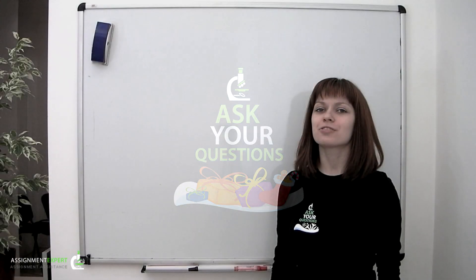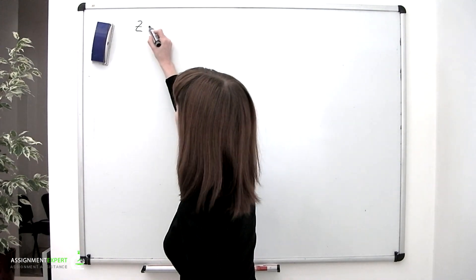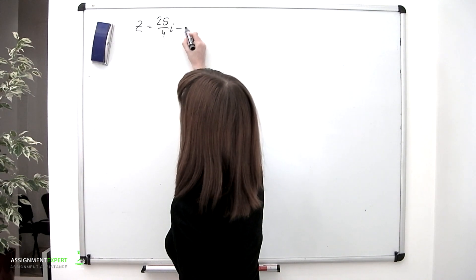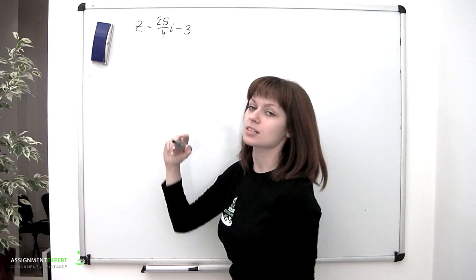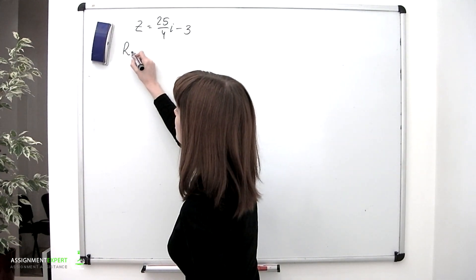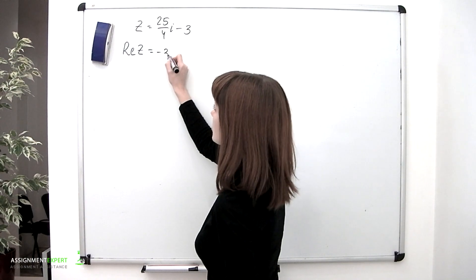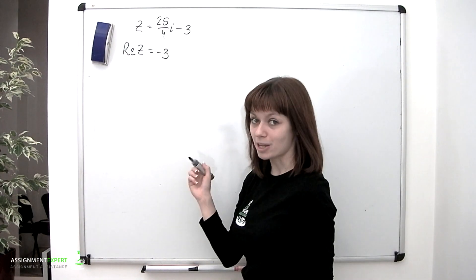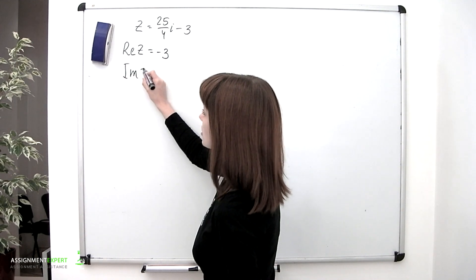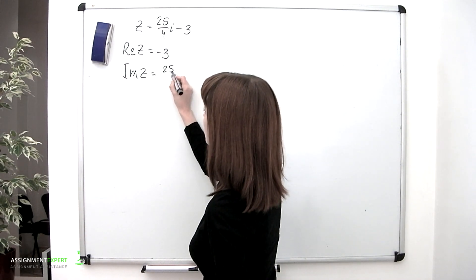Complex numbers are often denoted by the letter z. So z = (25/4)i - 3, and that is a complex number. The real part of a complex number is denoted as Re(z), and in our case equals -3. The imaginary part of a complex number is denoted as Im(z), and in this case equals 25/4.